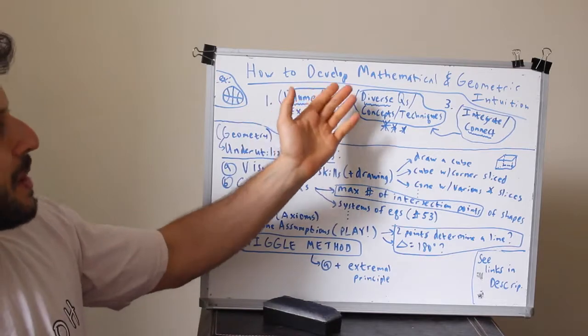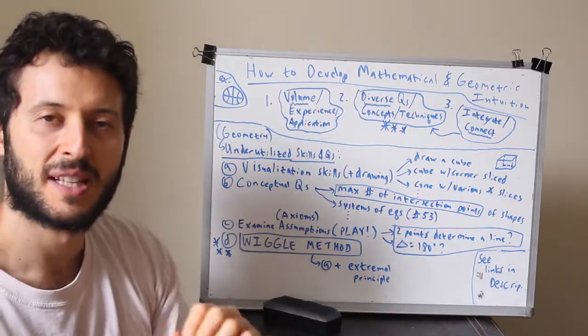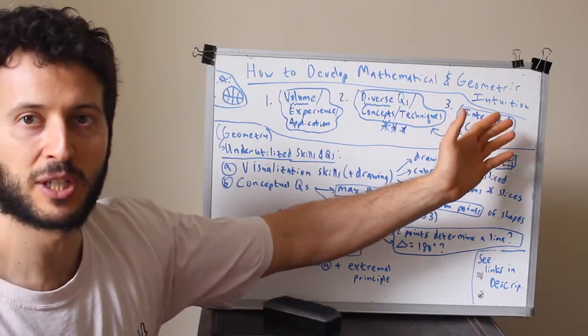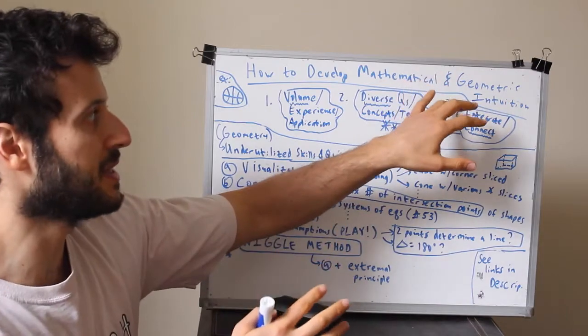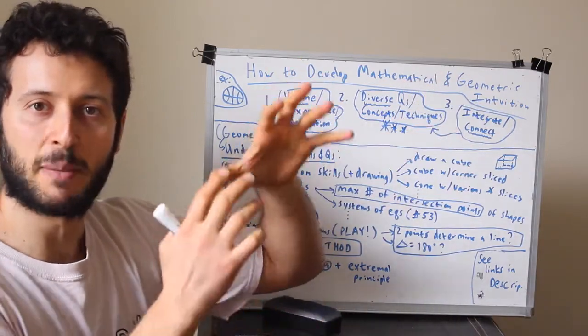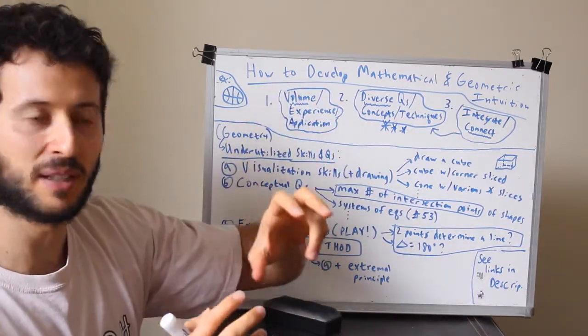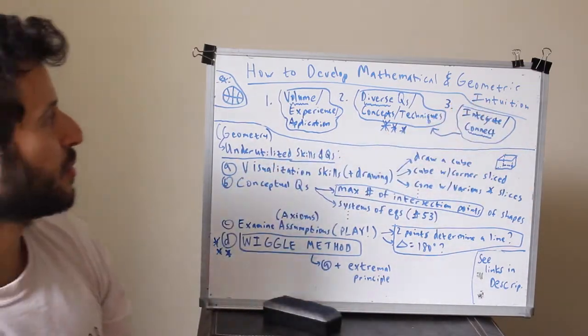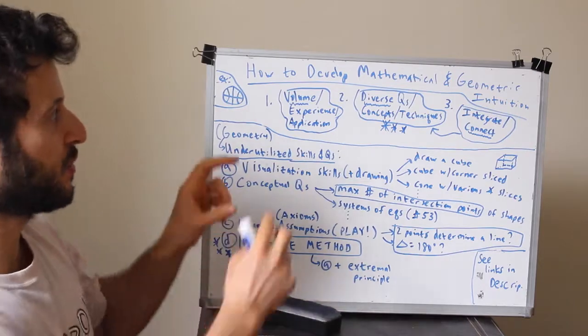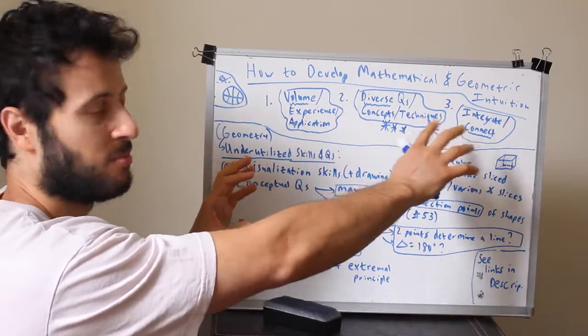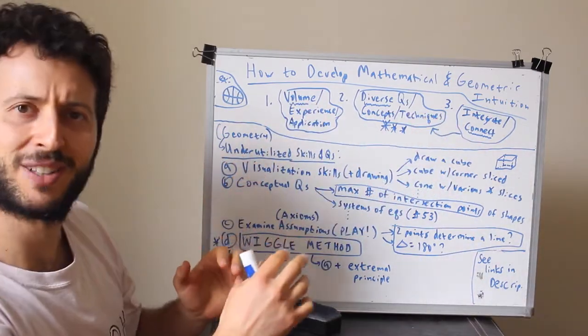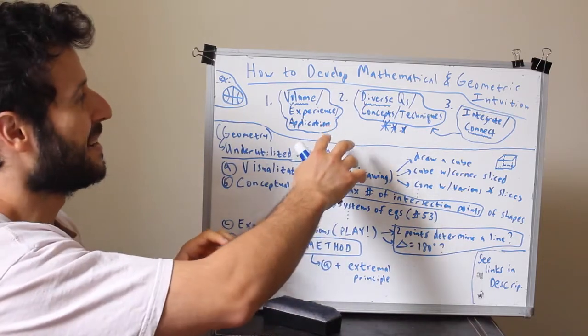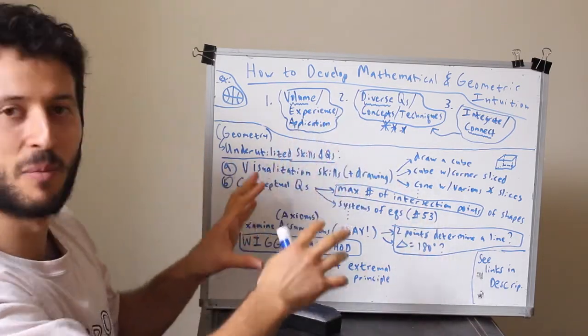We're going to talk about how to develop mathematical intuition, specifically geometric intuition. Since this is in the geometry portion of the art of math playlist, we're going to tailor it a little more to the geometric part. There'll be two parts of the video - the first part will be math in general or any subject, and then the second part will be a little more about geometry.